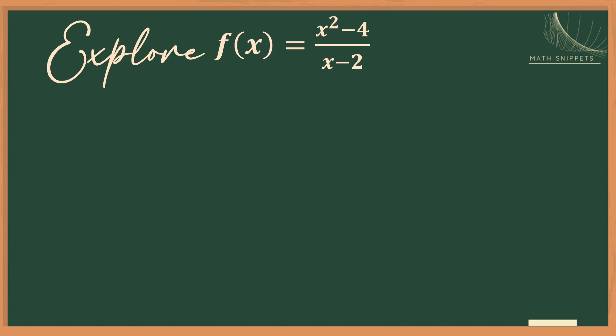Consider the function f given by x squared minus 4 over x minus 2. We know that this is a rational function, so the denominator should not be 0. It follows that x minus 2 should not be 0 since that is our denominator. Hence, x should not be equal to 2.